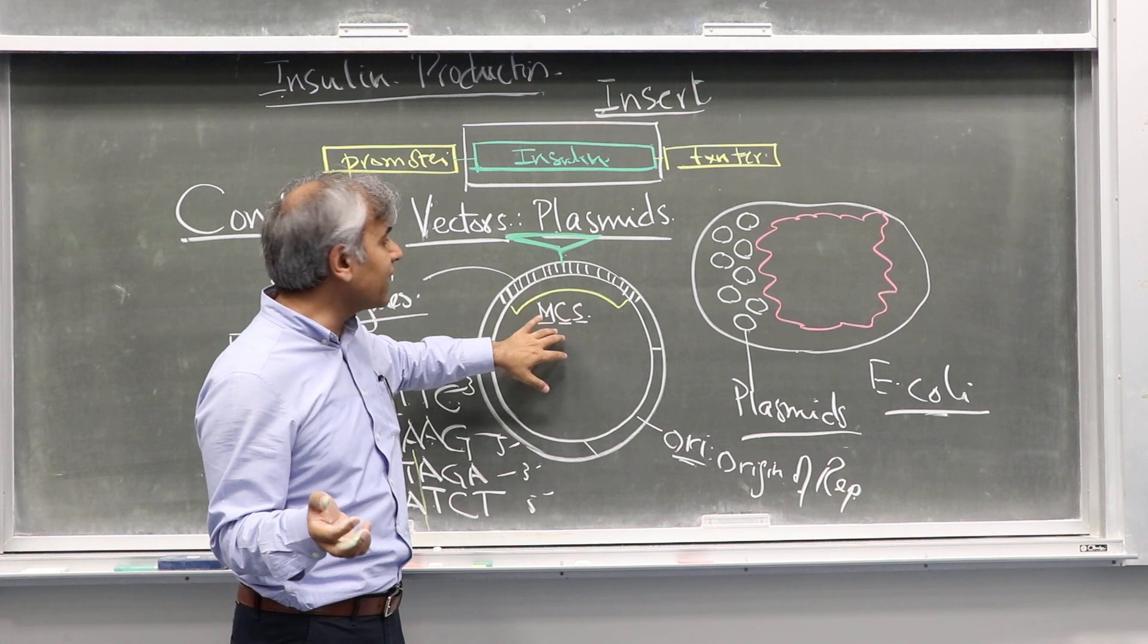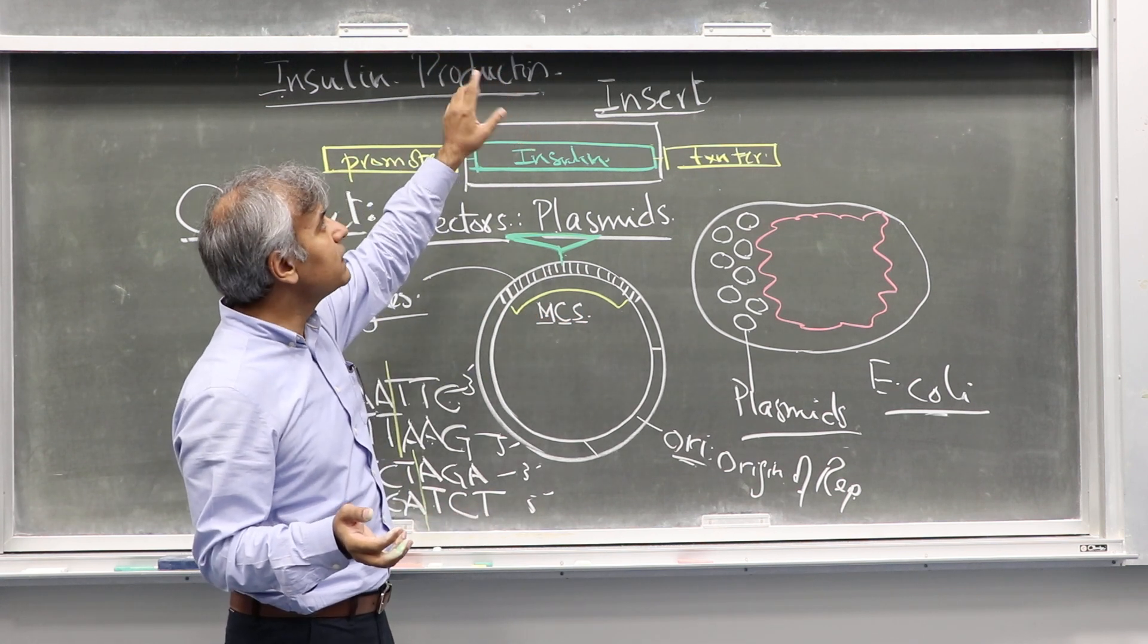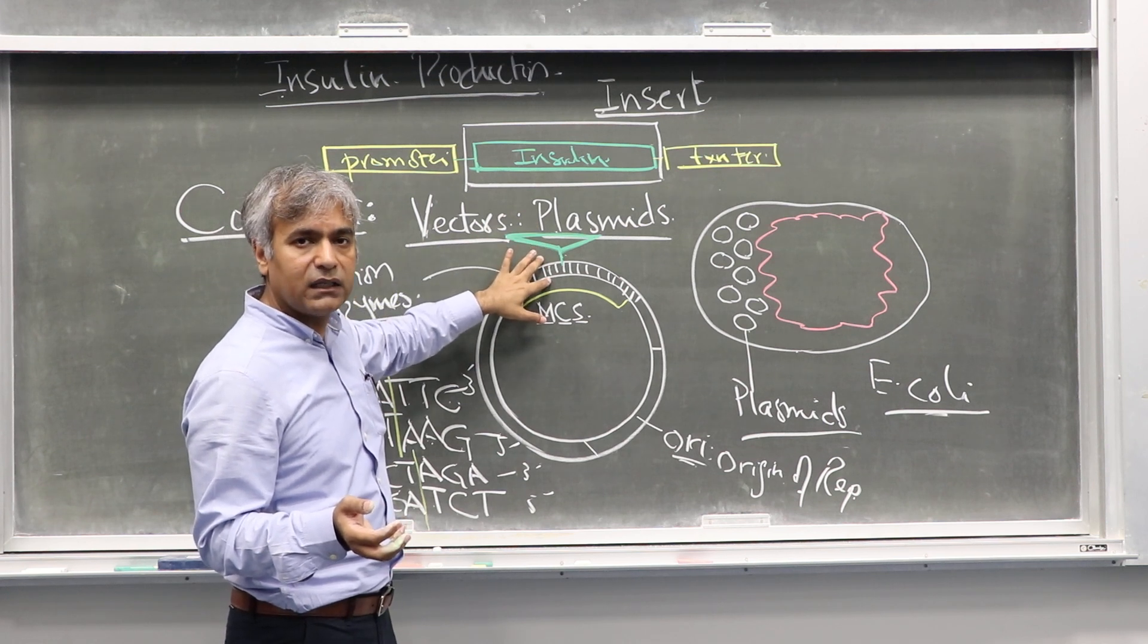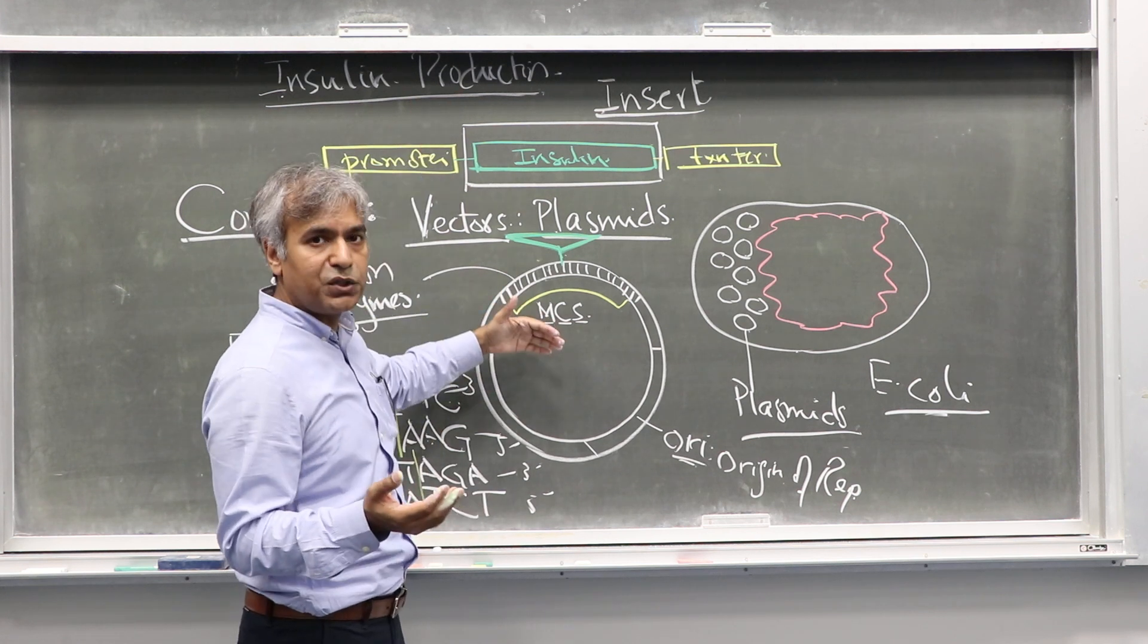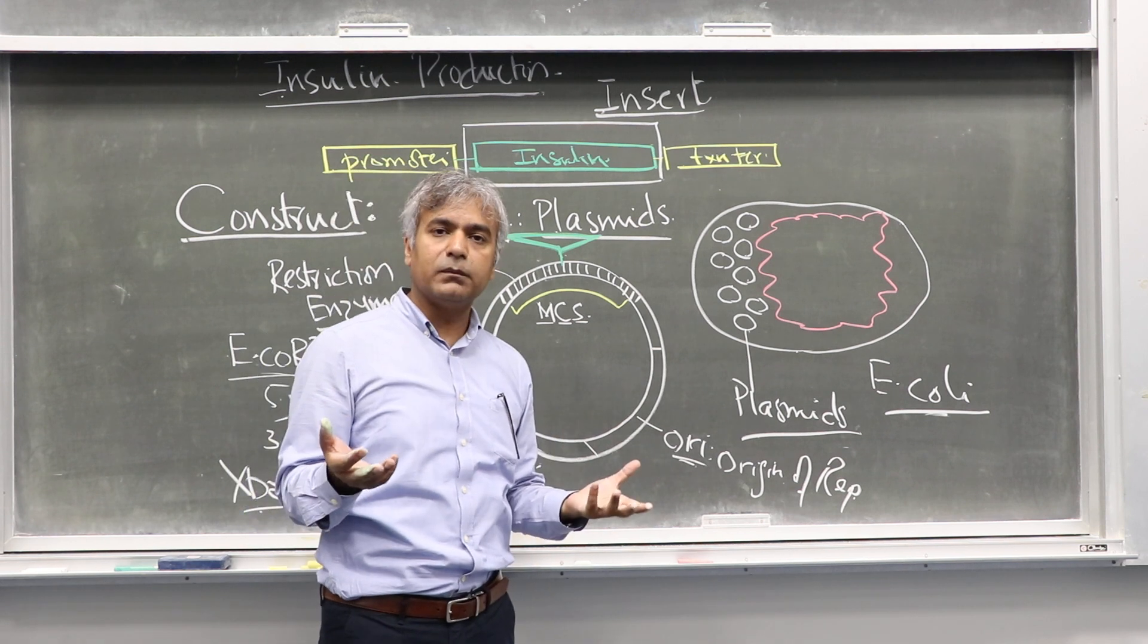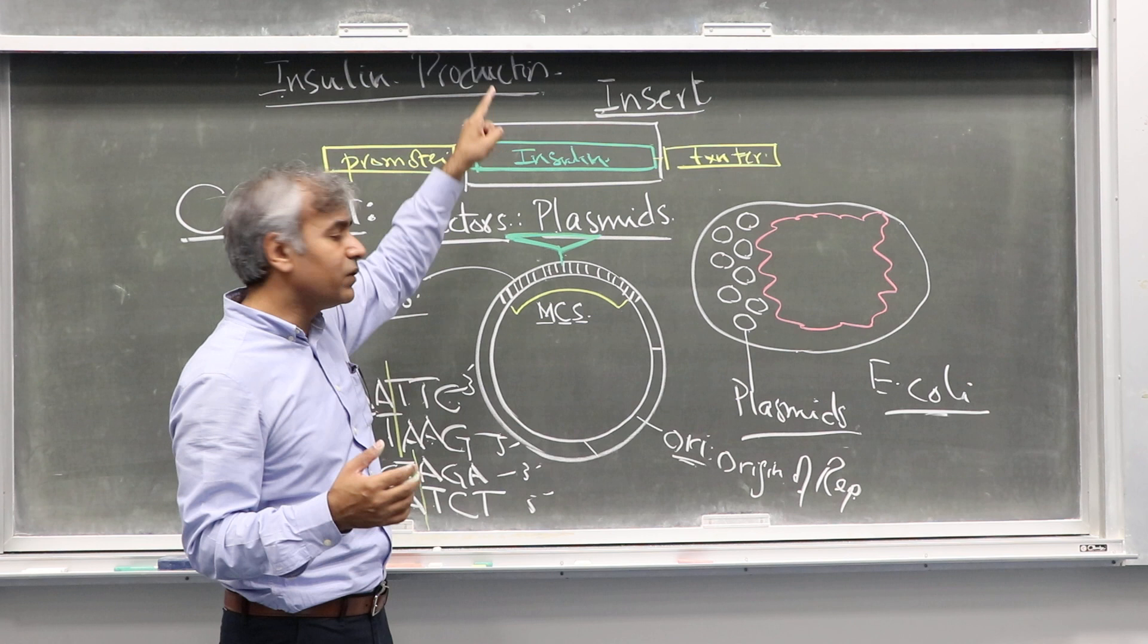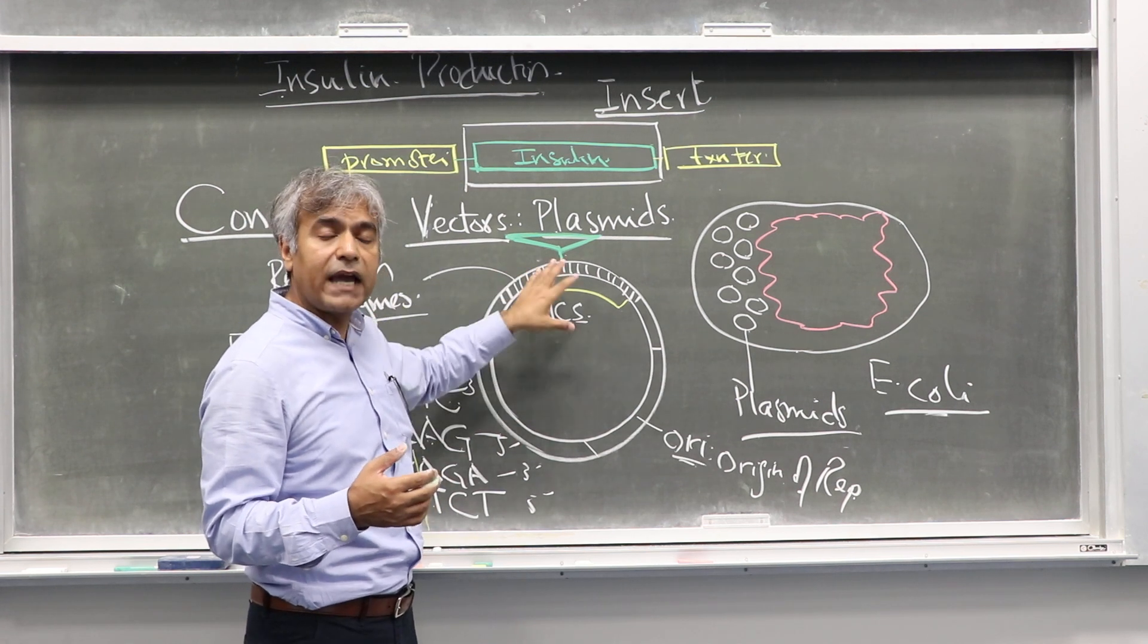This construct is ready—you have cloned the insulin gene within the vector with the help of DNA ligase. The two are joined together. Now the next thing is: how do we confirm, how do we make sure that the gene we tried to ligate with the vector is actually cloned?